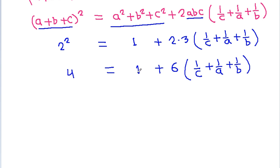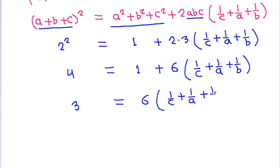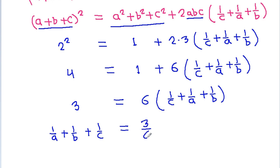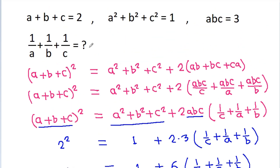And 4 minus 1 equals 6 times (1 by a plus 1 by b plus 1 by c), so 1 by a plus 1 by b plus 1 by c equals 3 by 6, that is 1 by 2. The answer is 1 by 2.